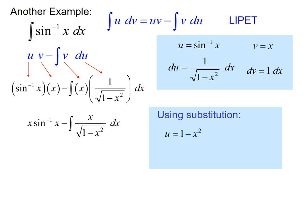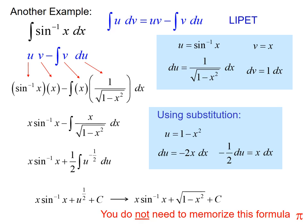So we establish u, there's du, manipulate that to allow us to make our substitution, and now we're ready to substitute. Take the antiderivative and replace u with 1 minus x squared.